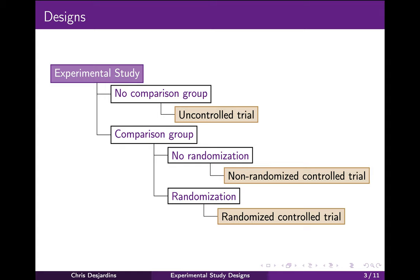Experimental studies can involve one or more comparison or control groups, or no control groups, which would be called an uncontrolled study. They also may involve random assignment, known as randomization, of participants to treatments. Don't get randomization confused with random sampling. Experimental studies include laboratory studies, preclinical or animal studies, and clinical trials. We will focus here on clinical trials.